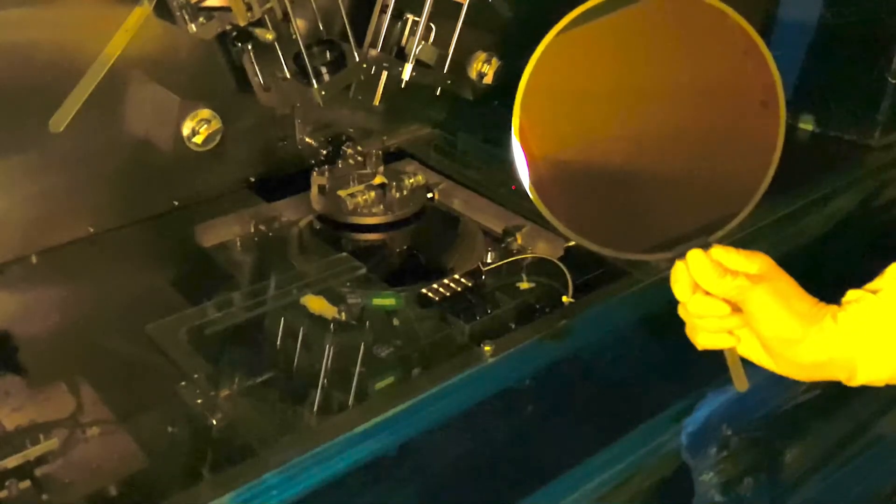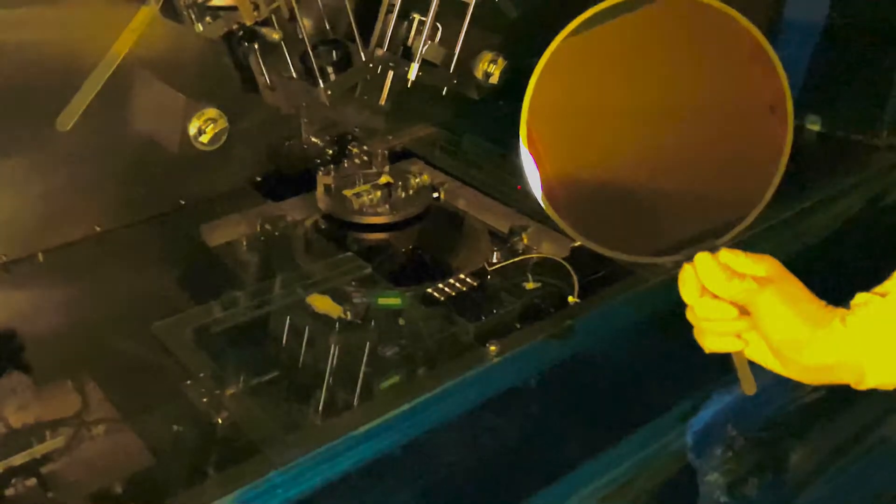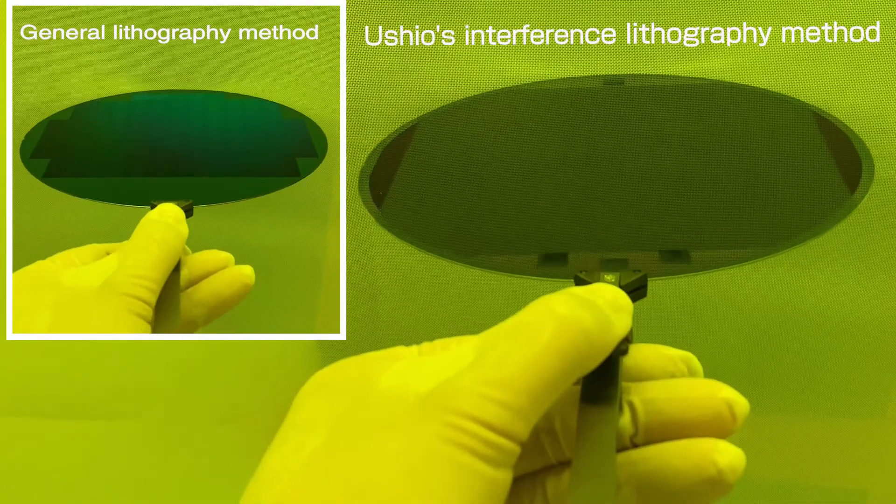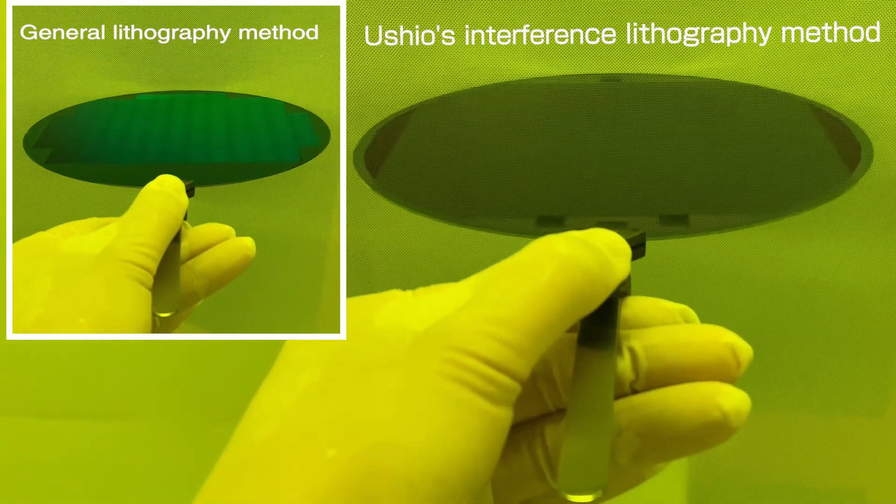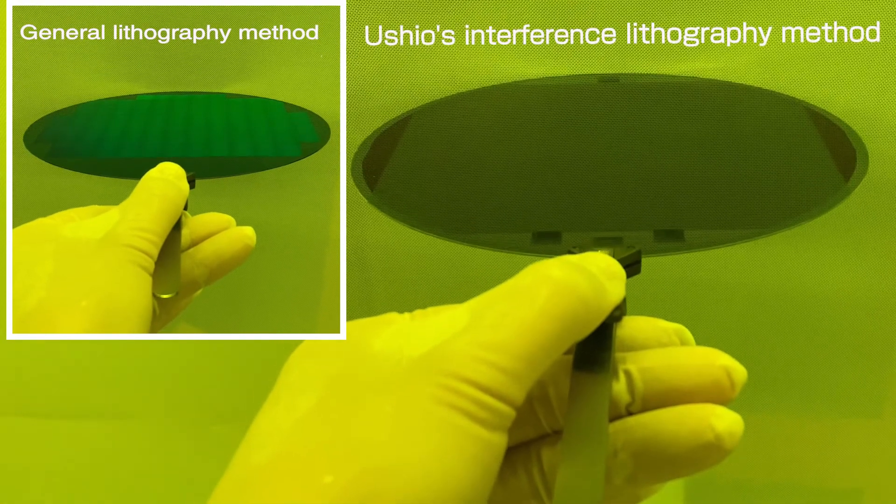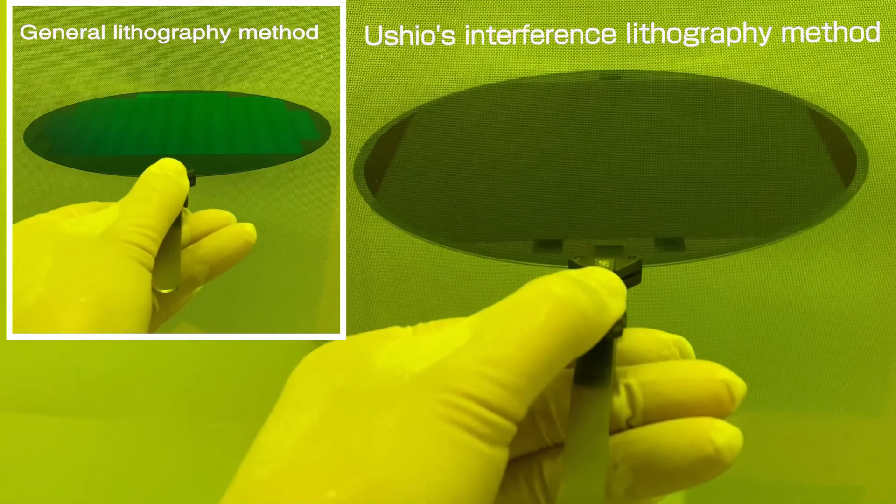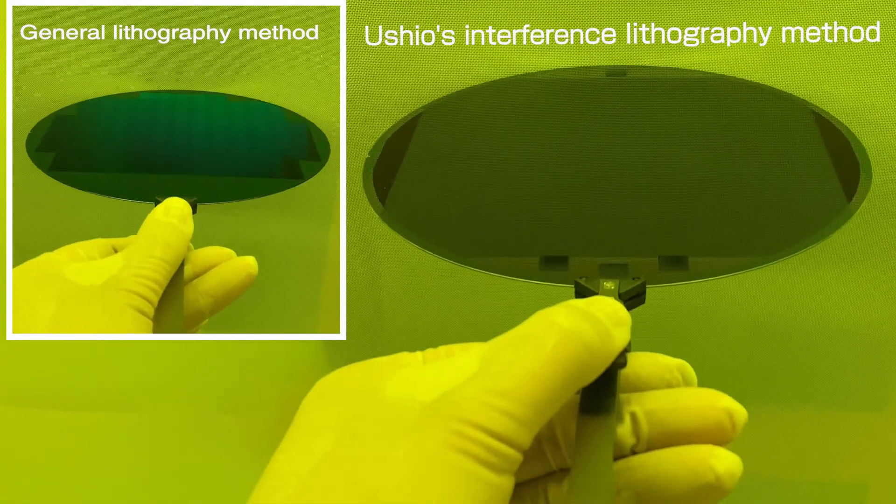This is a sample wafer exposed by Ushuo's interference lithography system. The left sample is exposed by a normal stepper. The right-side sample is exposed by our original interference lithography system. You can see our system can make the pattern more widely on the wafer.